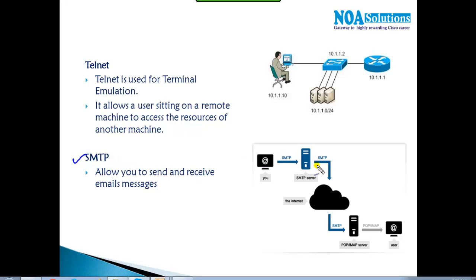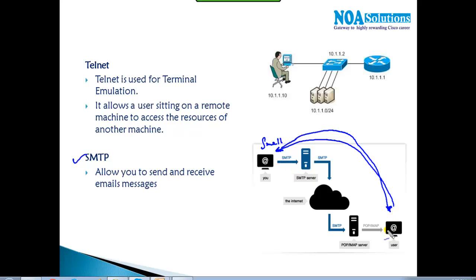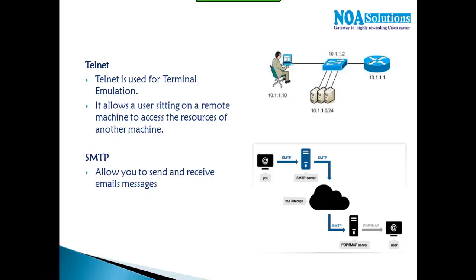SMTP — Simple Mail Transfer Protocol — is majorly responsible for sending and receiving emails. When you access Gmail or similar services, the request goes to the mail server and the server replies back. All mailboxes are stored in a centralized mail server, and SMTP allows you to access those mails and send and receive them. Other related protocols include IMAP and POP3, but SMTP is the primary TCP/IP mail protocol.